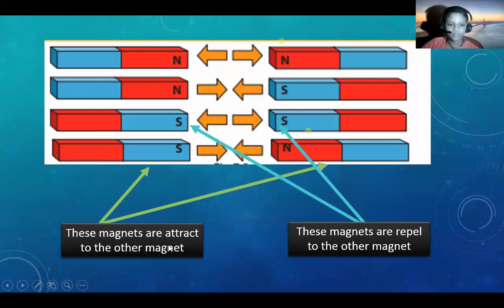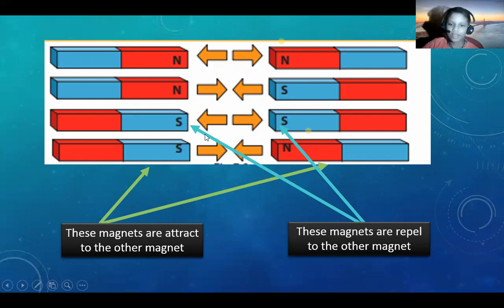These magnets are attracted. When one magnet has a south pole and another magnet has a north pole, they attract each other. In south and south, they are not attracted — they repel.